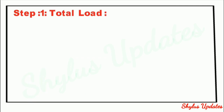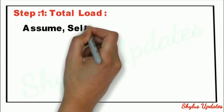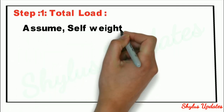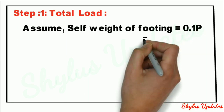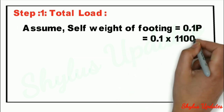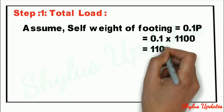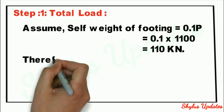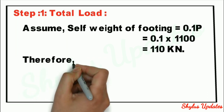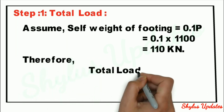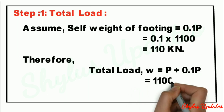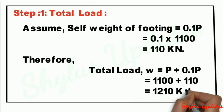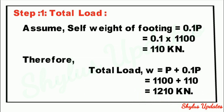Step 1: Total Load. Assume self weight of footing as 0.1P. Substituting the values, we get 110 kN. Therefore, total load W is equal to P plus 0.1P. When we substitute the value, we get the answer 1210 kN.